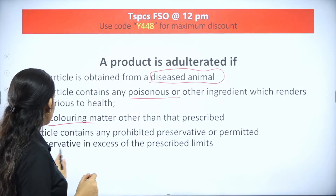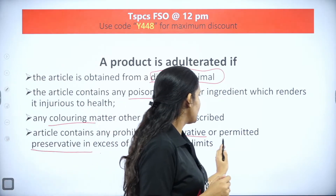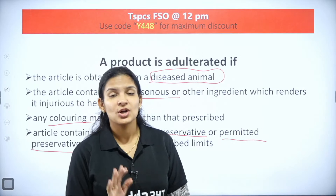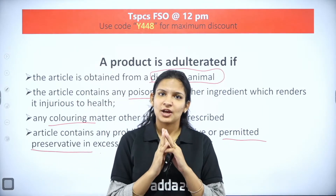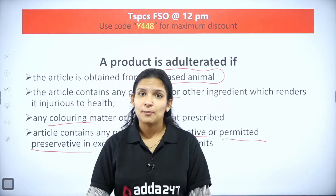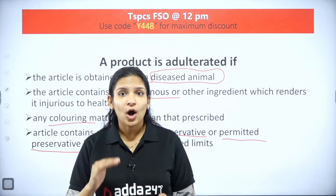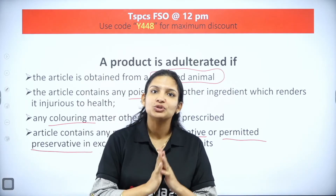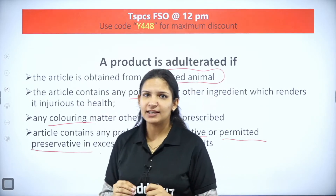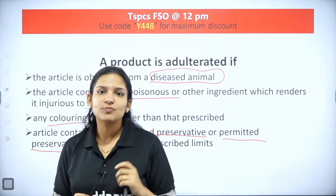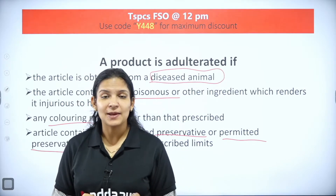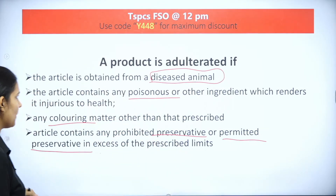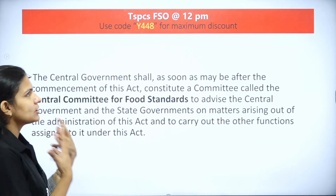Another condition covers coloring agents, preservatives, and additives. If you are using any additive, preservative, or coloring agent which is not permitted or not listed by FSSAI, or if you are adding a prescribed one but in a higher dose than recommended - that also counts as adulteration. Any additive not classified or identified by FSSAI will count as adulteration.